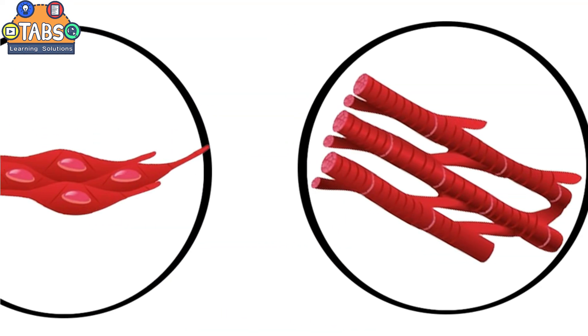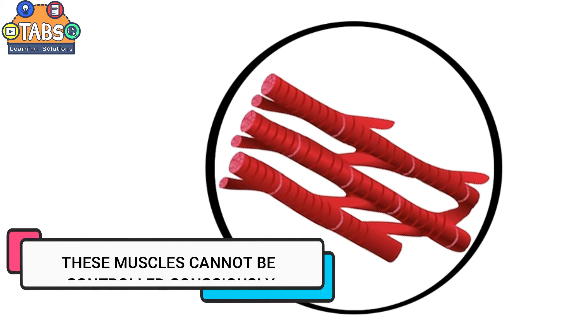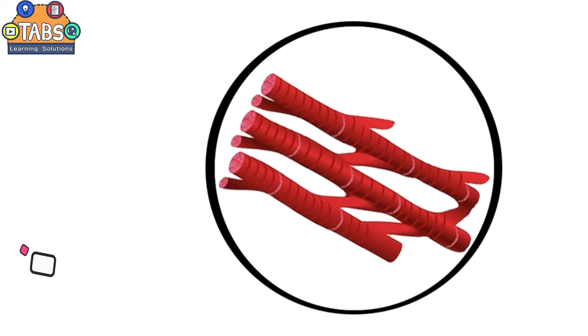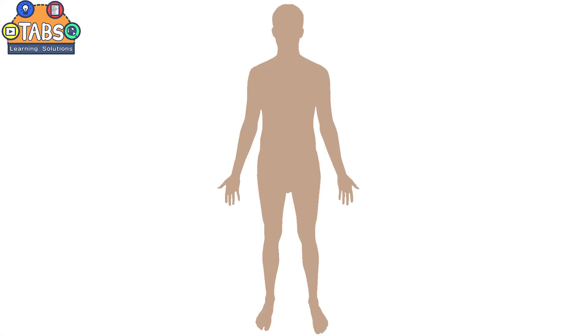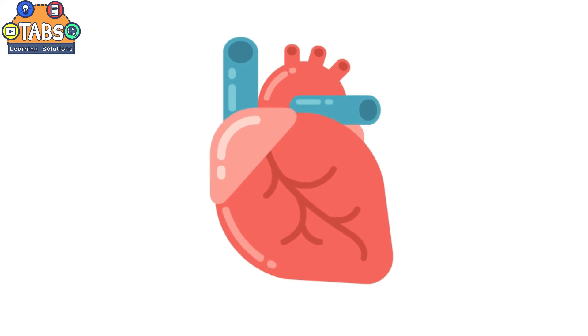And the last type of muscle tissue is the cardiac muscles. These muscles cannot be controlled consciously, so they are considered as an involuntary muscle. They are found in the heart and are responsible for pumping blood throughout the body.